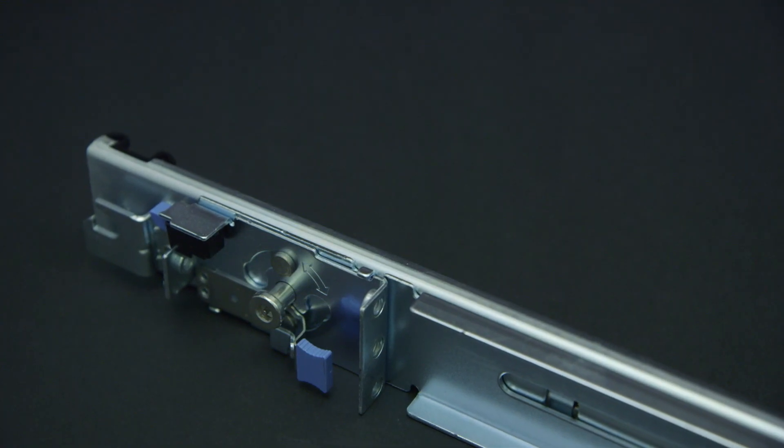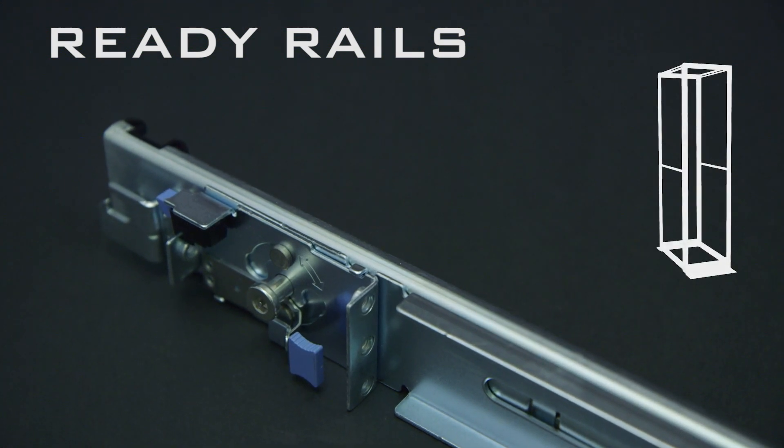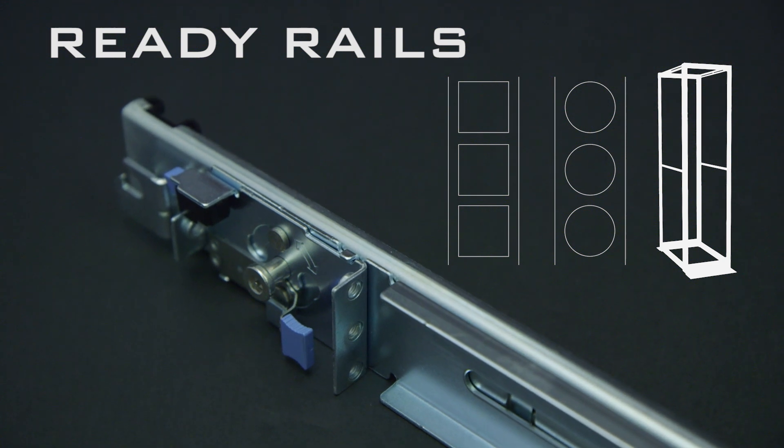For some systems, Dell makes combination rail kits called rapid Versa or ready rail kits that can be mounted in any type of four-post rack. Dell ready rails are the update to rapid Versa. Ready rails are the most universal Dell rail kits.